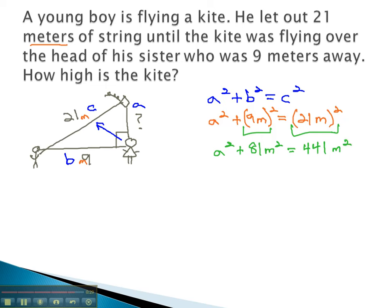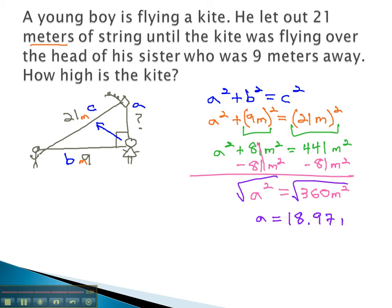And then we start isolating the variable by subtracting the 81 square meters from both sides. This gives us a squared equals 360 square meters. And finally, we can get rid of the squared on our very last step by taking the square root. And a, the height of this kite is 18.97 meters.